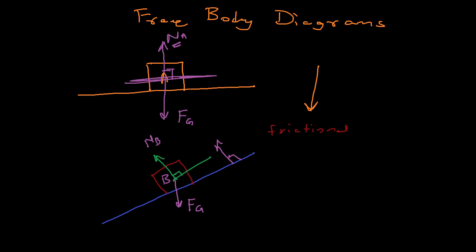The third force opposes the motion of the block. The block tends to move down the incline but doesn't, because there's a frictional force acting in the opposite direction, denoted by F. So those are the three forces acting on the block on the inclined plane. In the next video we'll do more complicated examples on free body diagrams and then proceed to the equilibrium of forces.